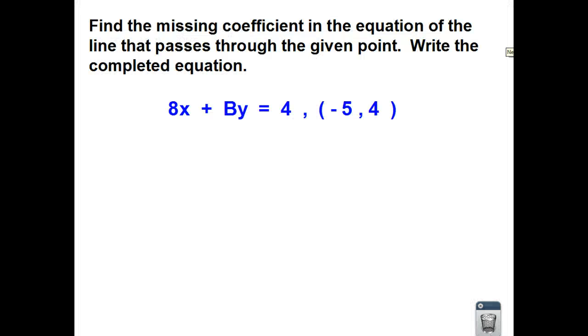Alright, last one. It says find the missing coefficient in the equation of the line that passes through this point, and then write the completed equation. So if I'm finding the missing coefficient, I know that 8 is a coefficient, B is a coefficient, and our C is known as positive 4. So we're going to try to figure out what this B term is. So using this given point, this is your x and this is your y, we're going to substitute them in. So 8 times x plus B, which is unknown, times 4. 4 coming from our point, and that's equal to our given C. So negative 40. B times 4 is known as 4B. Just rewrite that a little bit, it's a little cleaner.